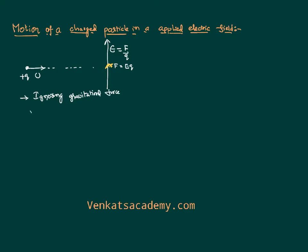I would like to find the velocity along the x direction after some time. Writing the formula v x = u x + a x × t. Since u x is u, and there is no force along the x direction, there is no acceleration along x. So v x is nothing but equal to u x — the velocity along the x direction remains the same.